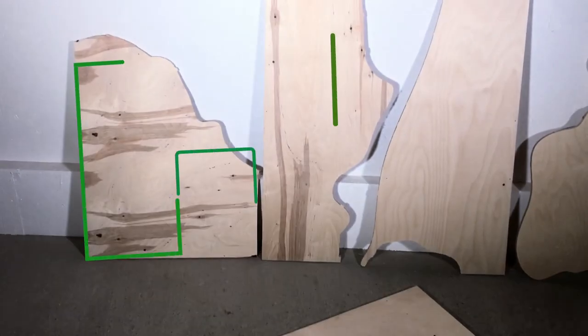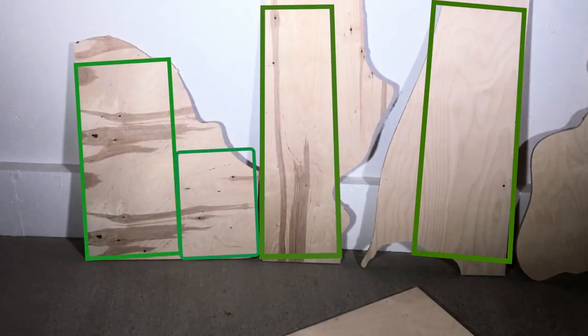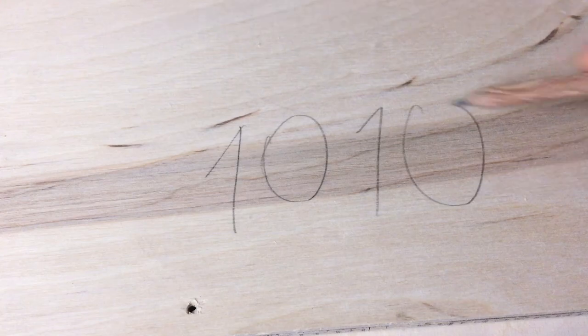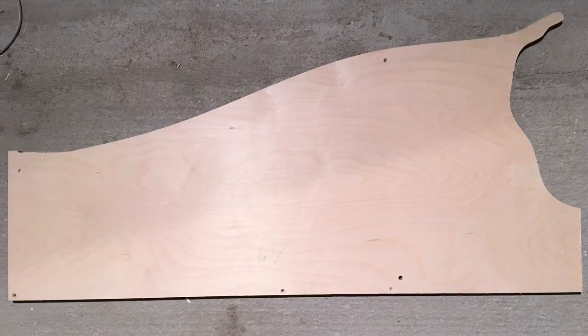At first I had the idea of cutting the offcuts in rectangular shapes, but there would be too much wasted material. So to use the offcuts as efficiently as possible I decided to measure the length of each offcut, write it down on the workpiece, and take a photo of each plywood piece.